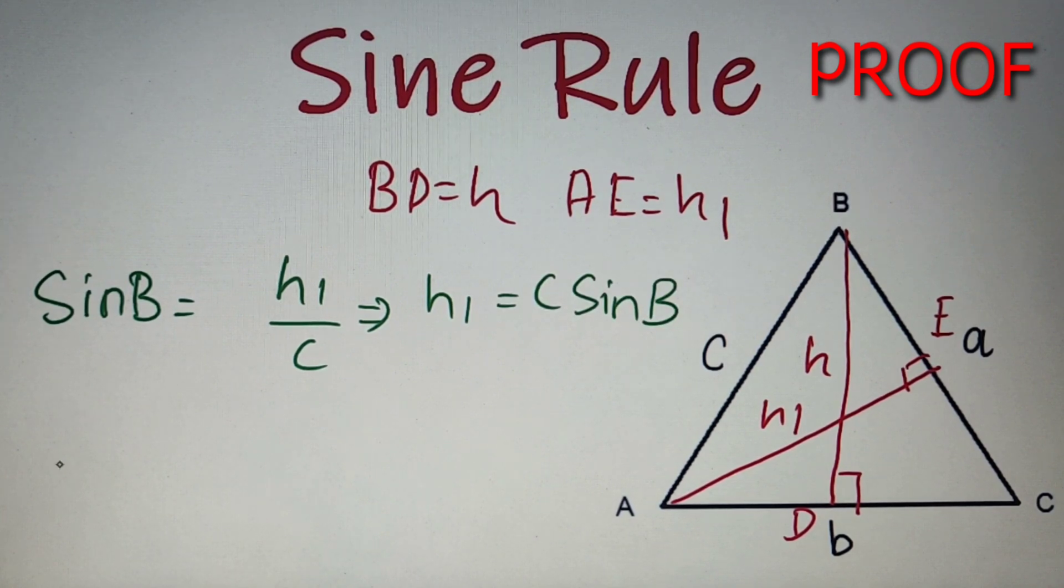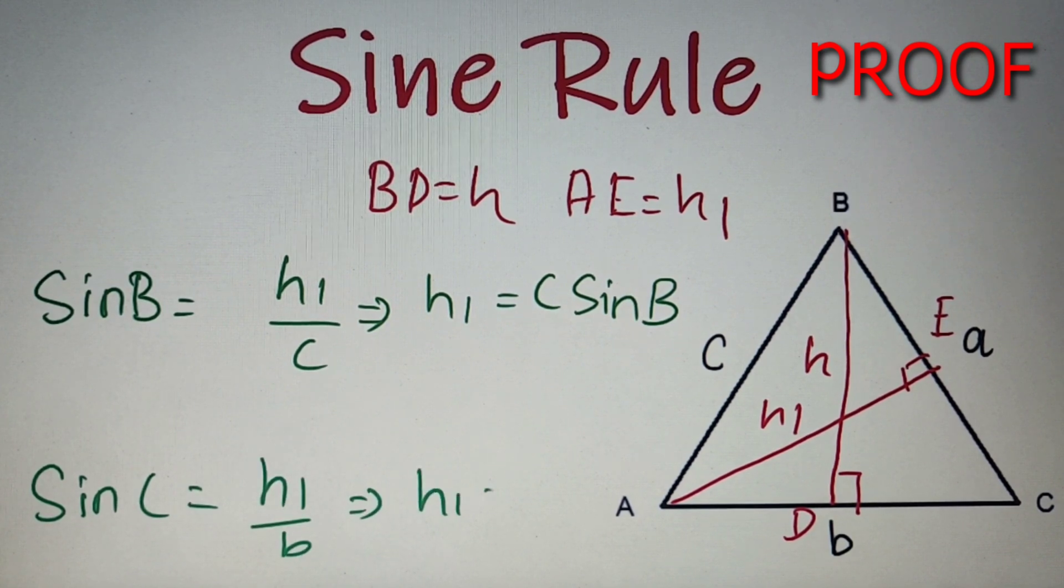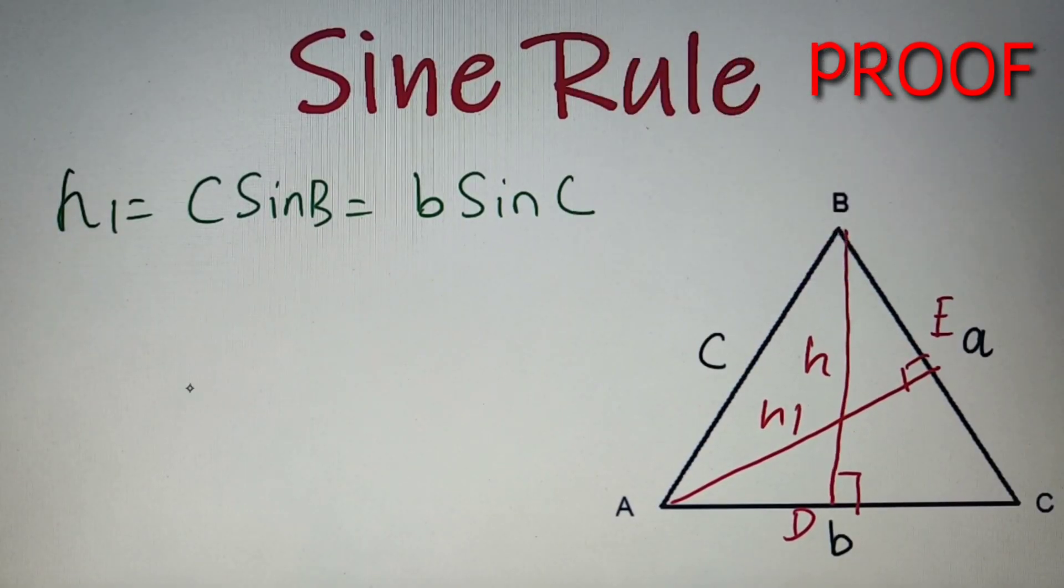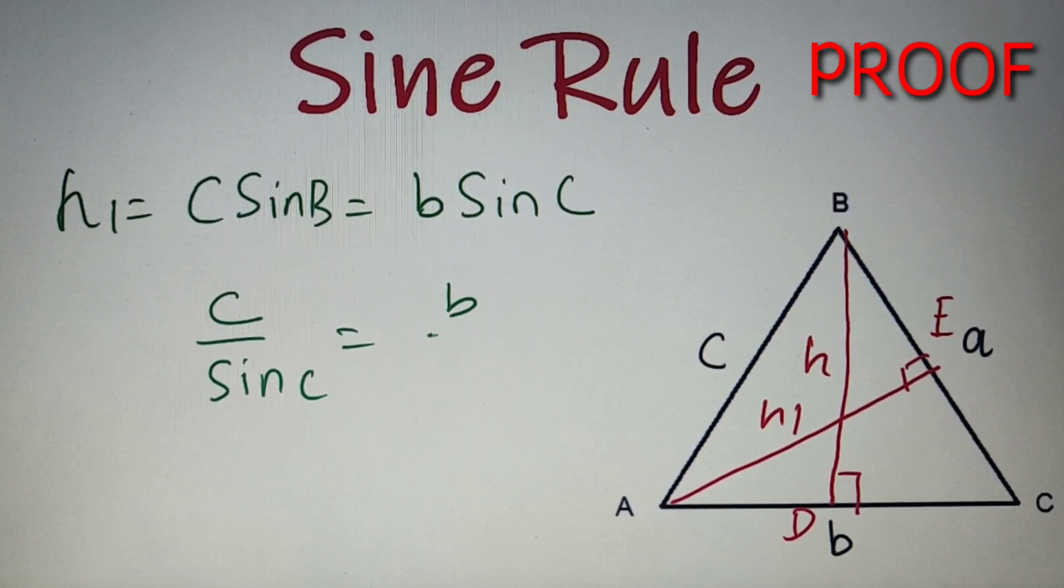Now by using the same concept in the triangle AEC, we can calculate the value of sine C. So sine C will be equal to H1 by B, which implies that H1 is equal to B sine C. So we have got two values for H1 which are C sine B and B sine C respectively, which can also be written as C by sine C is equal to B by sine B.